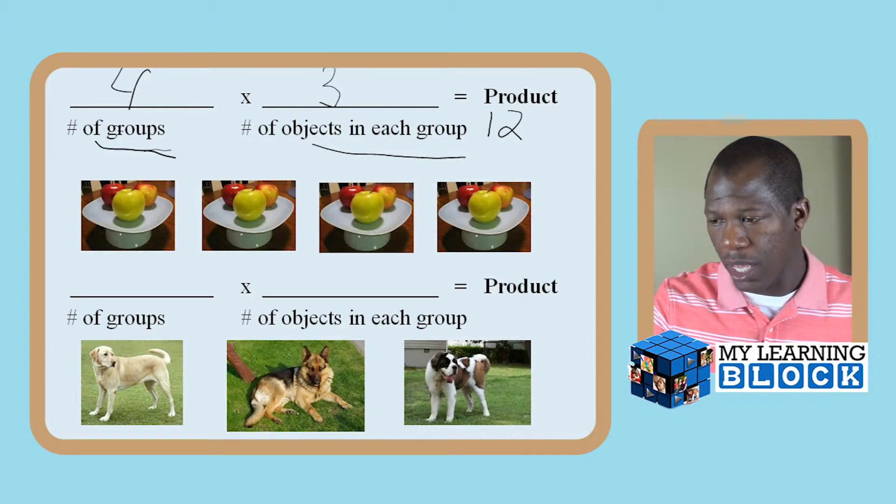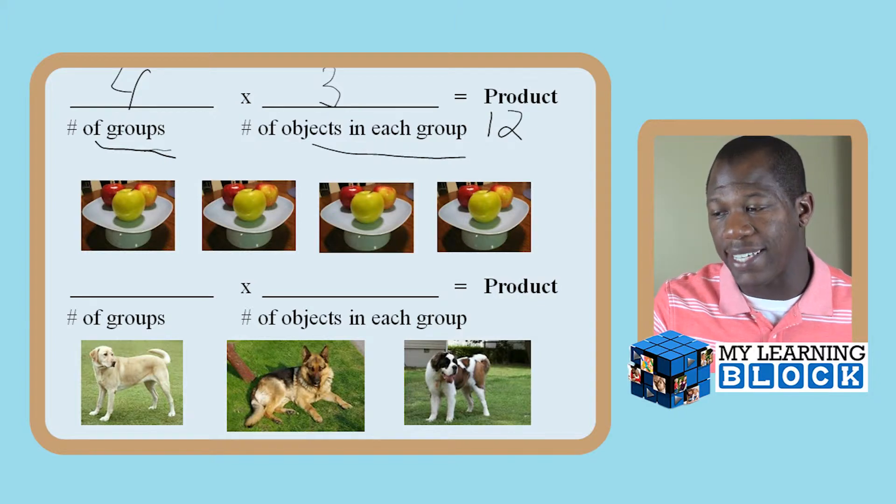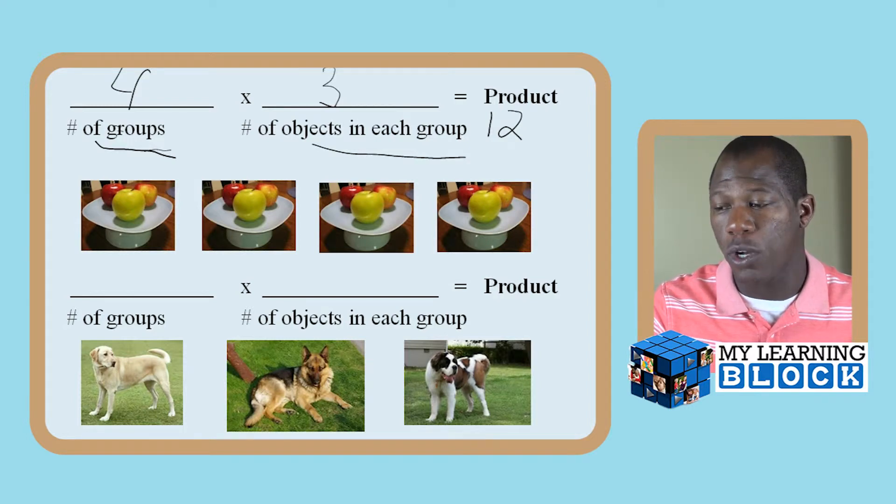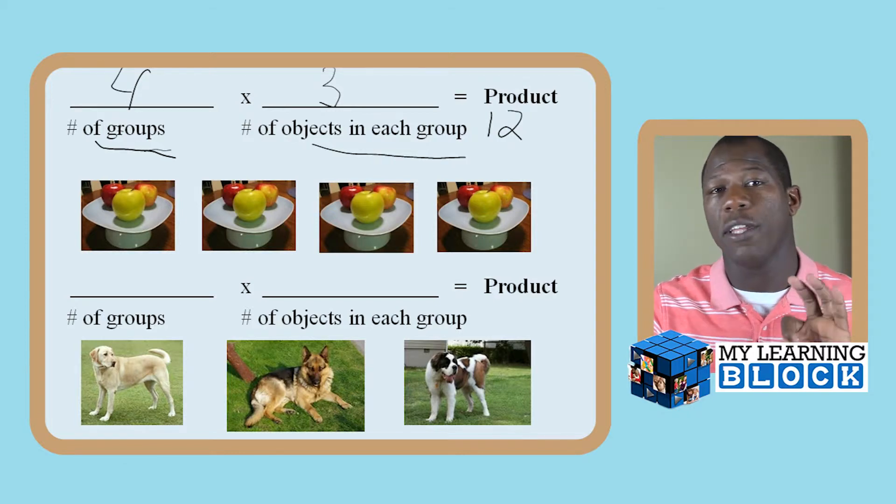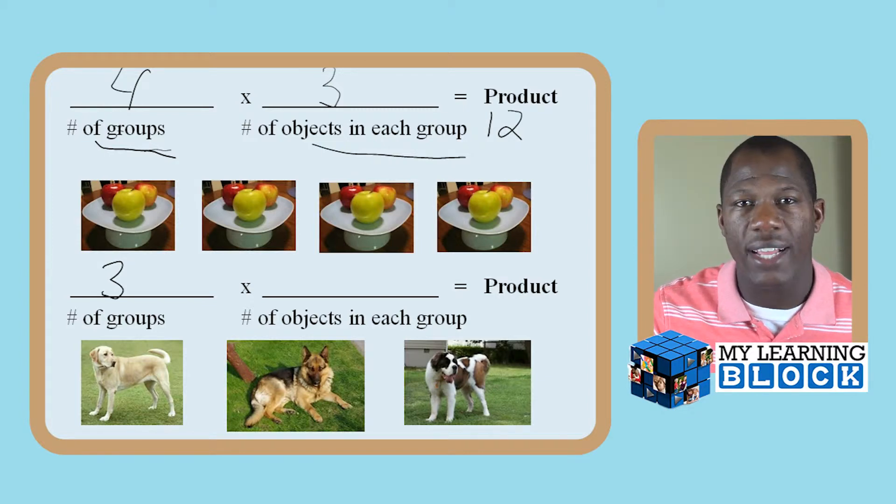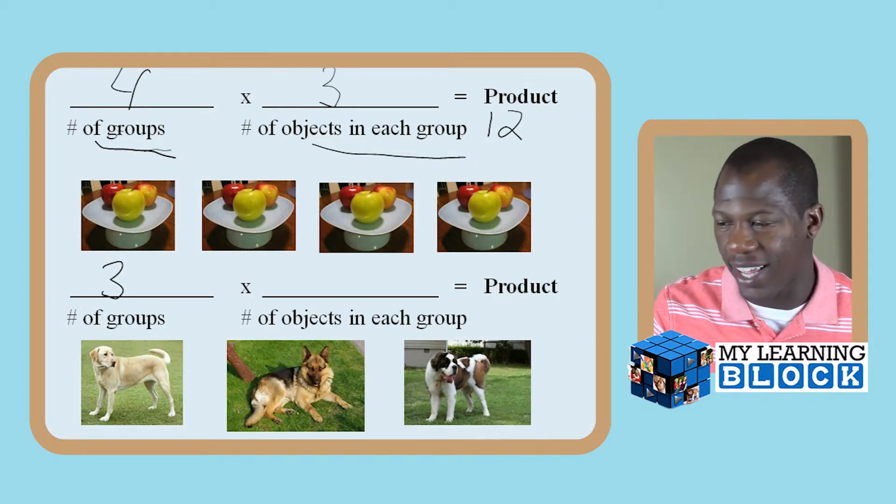Now in the second problem, you see our number of groups per se is not necessarily groups, but they're dogs. If we looked at these dogs, I'm going to work on the legs. So I have one, two, three dogs. So that would be three different groups. Now, how many legs does each dog have?